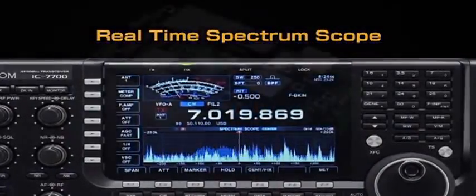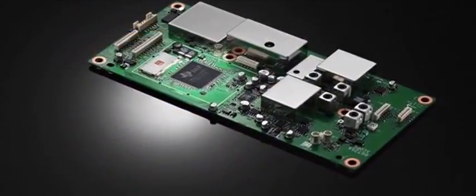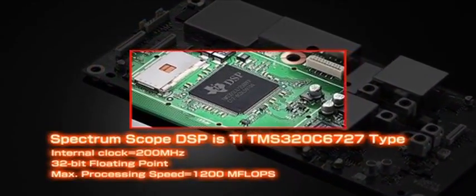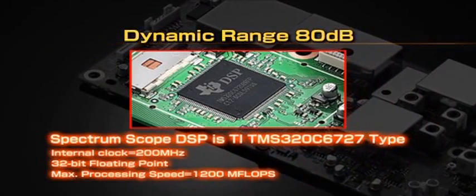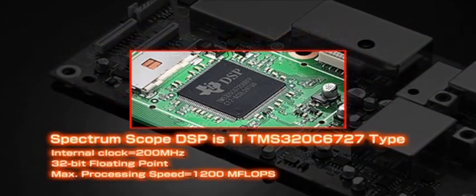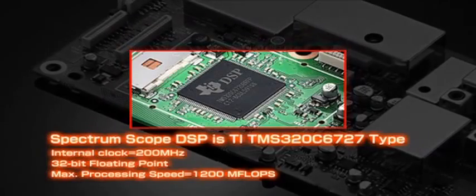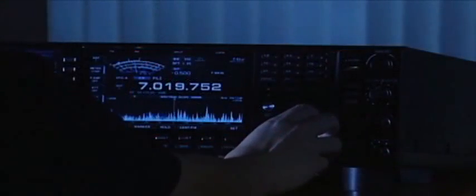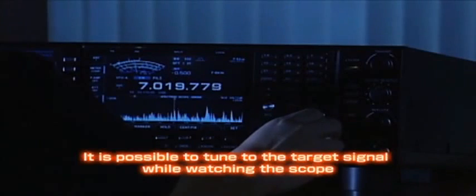With the dedicated DSP unit for the spectrum scope, the IC7700 achieves 80 dB of dynamic range at the signal input level. It also improves the scope response time and signal resolution so that it is possible to accurately tune the intended signal as you see it on the spectrum scope screen.